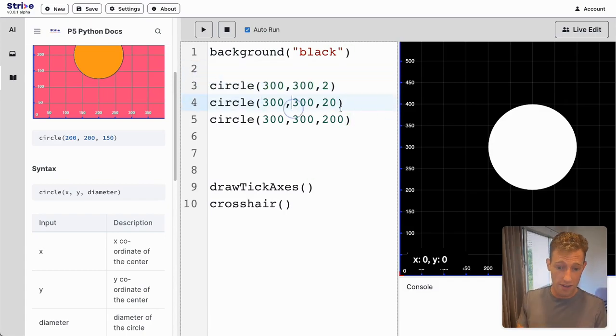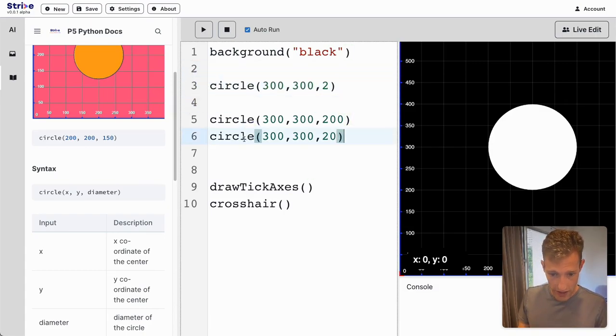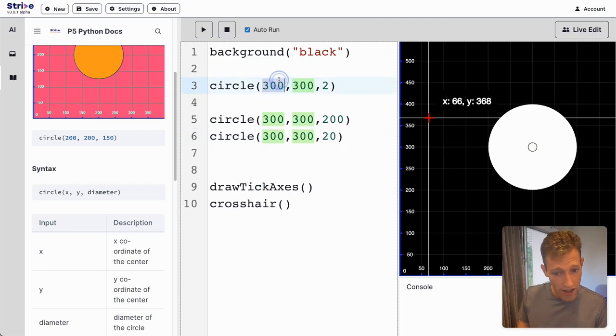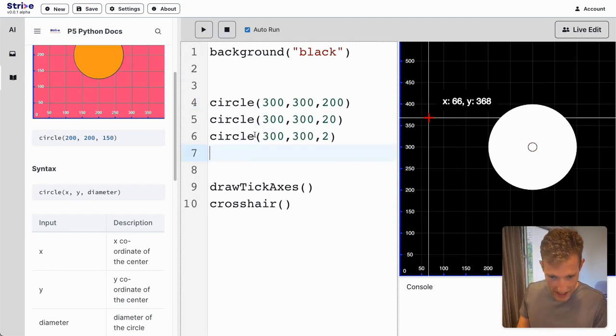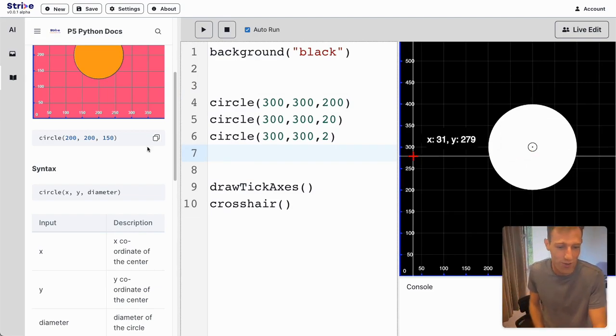If I want to see these circles, I just need to rearrange them like this, and now I can see that circle. I still can't see this one, but that's because it's tiny. Oh, there it is—it's so small.